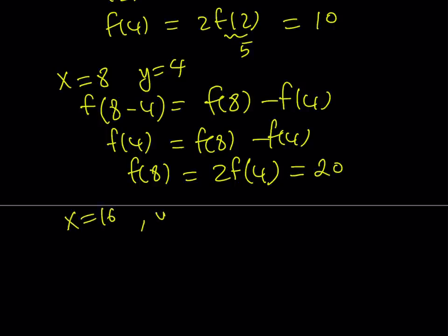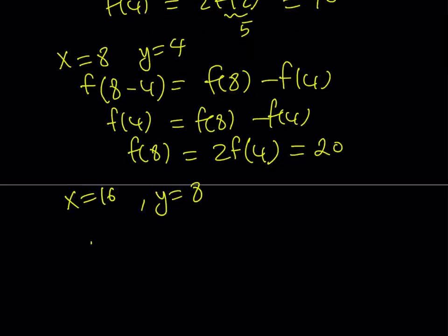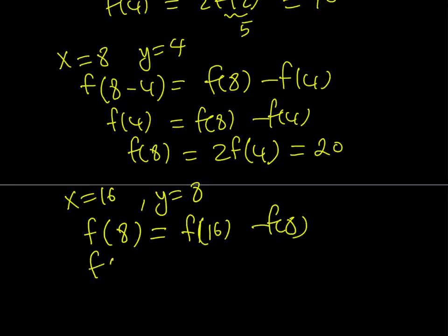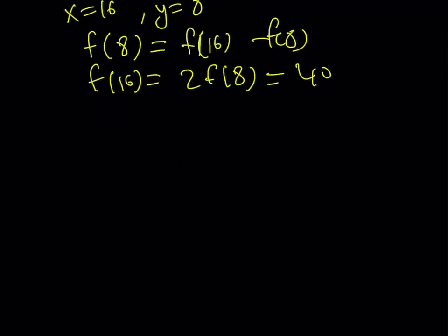Finally, I'm going to replace x with 16 and y with 8. That is going to give me f of 16 minus 8, which is f of 8, equals f of 16 minus f of 8. This means f of 16 can be written as 2 times f of 8. And f of 8 is equal to 20. Therefore, f of 16 is going to be 40.